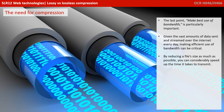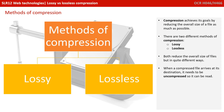The last point — make best use of bandwidth — is particularly important. Given the vast amounts of data that's now sent and streamed over the internet every day, making efficient use of bandwidth can be critical. By reducing a file's size as much as possible through compression, you can considerably speed up the time it takes to transmit. Compression achieves its goals by reducing the overall size of a file as much as it can.